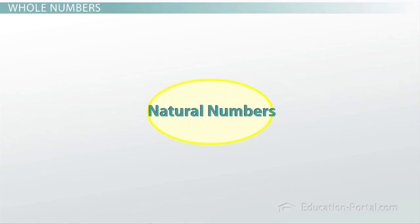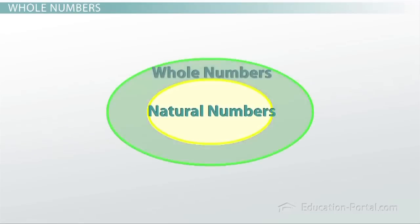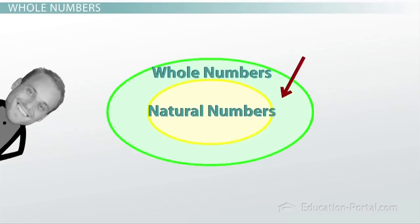If we get a tiny bit less specific, what we come to are called the whole numbers. All of the natural numbers are part of the whole numbers, just like all the people who live in Cupertino also live in Santa Clara County.